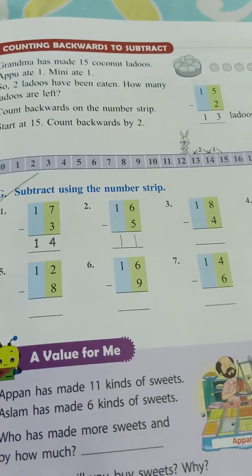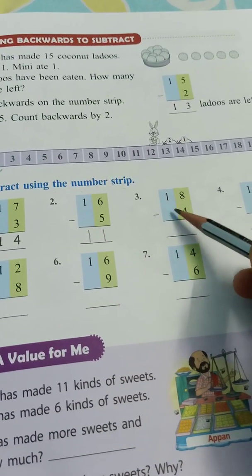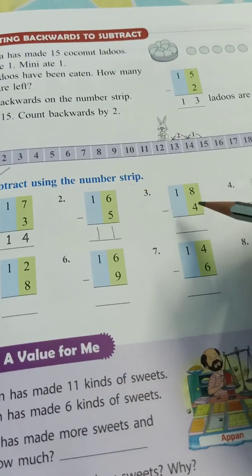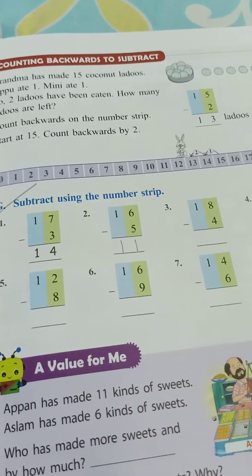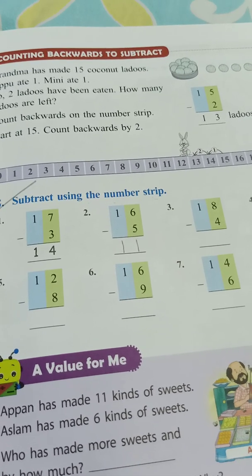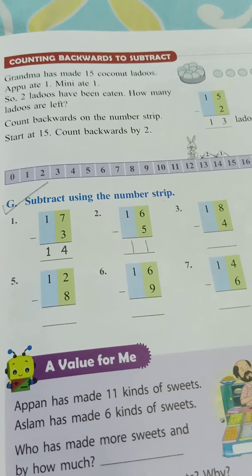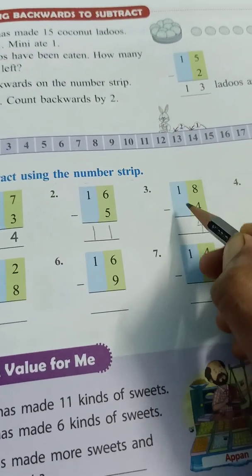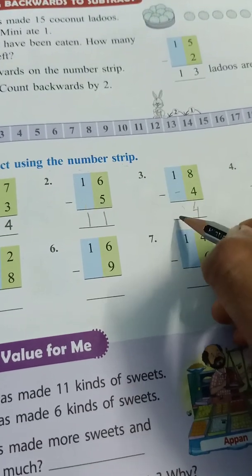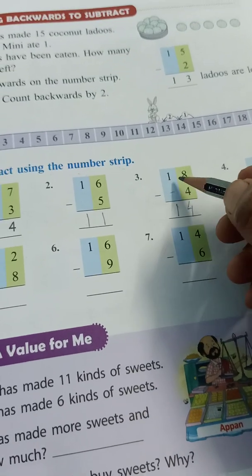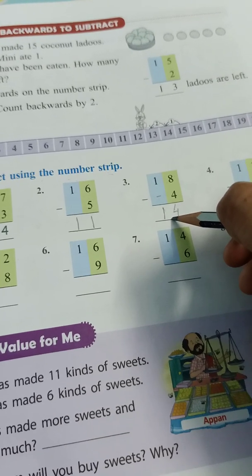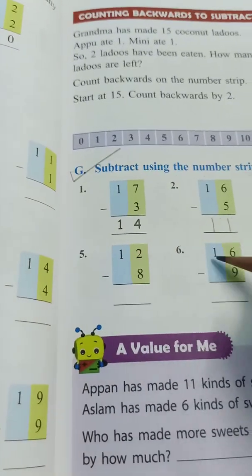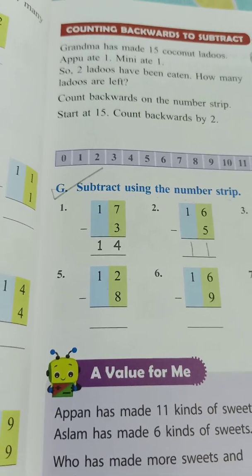Now coming to the next, third. 18 minus 4. First we have to minus vertically. 8 minus 4. Take out 8 fingers and minus 4. 1, 2, 3, 4. How many are left? 1, 2, 3, 4. How many are left? 4. Again there is no number, then 1. So 18 minus 4 is equal to 14. 4th, 5th, 6th and 7th you have to do. That's all for today.